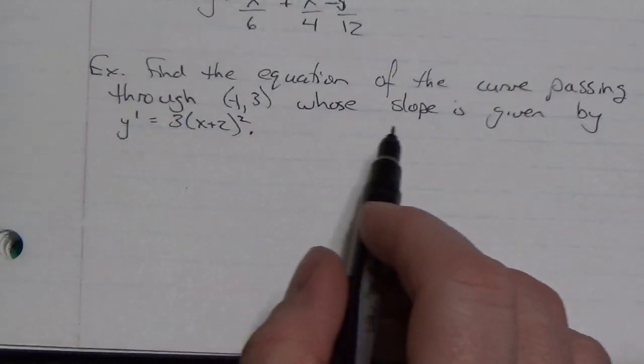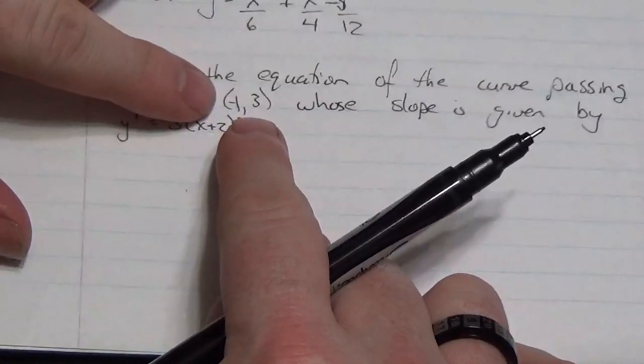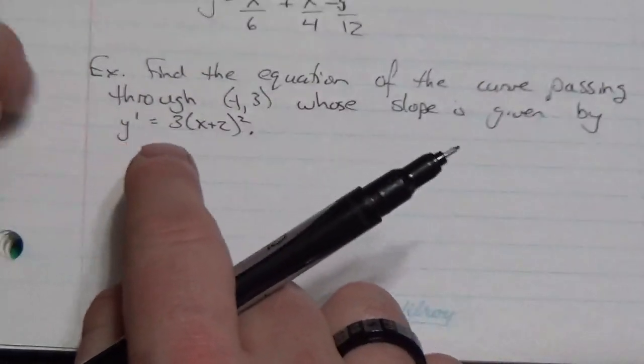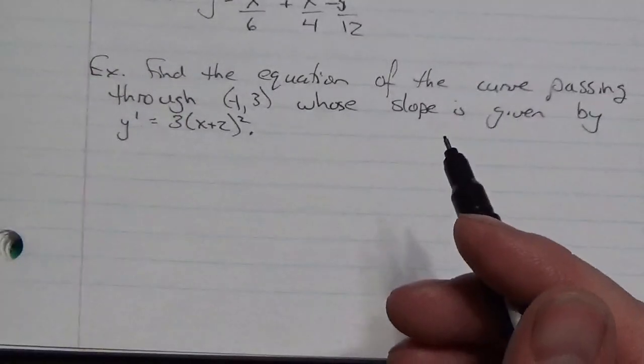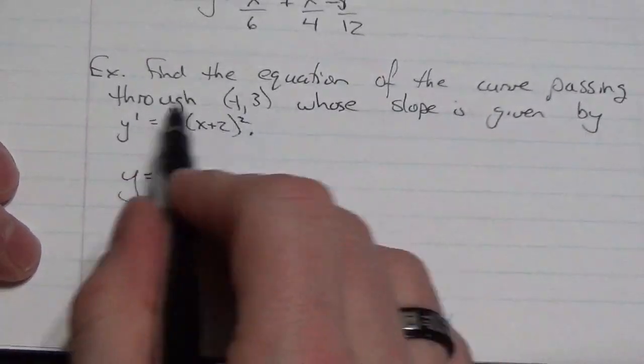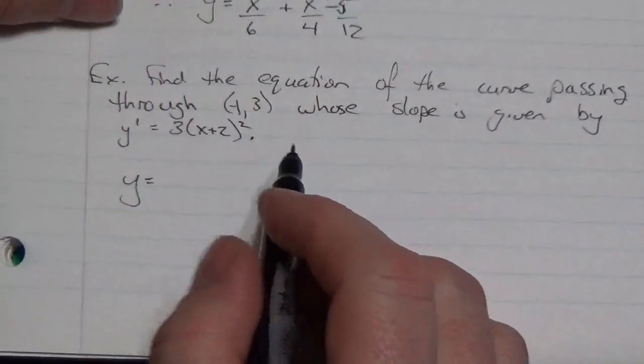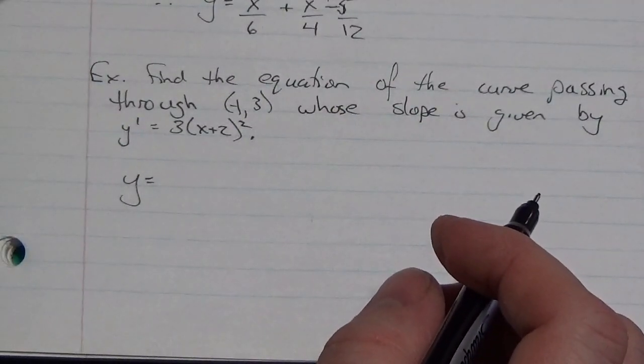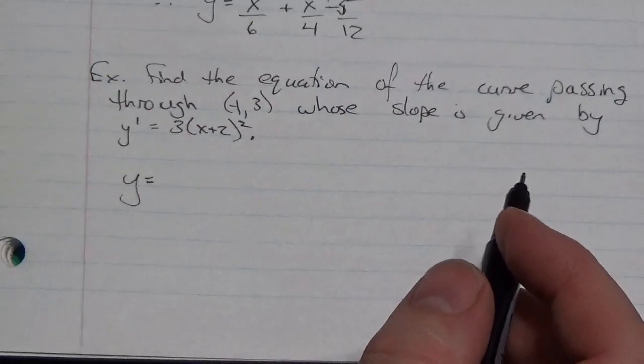Here's our next equation. Find the equation of the curve passing through the point (-1,3). So right there, there's our boundary condition. That's what's going to give us enough information to get the arbitrary constant. Whose slope is given by this function, y' = 3(x + 2)^2. There's my slope. I know that to get the function out of this, I simply have to take the antiderivative. Now, because of the way this is written, this looks like it needed the chain rule to have its derivative taken. However, the derivative of what's inside is just 1. So I think that's going to work in my favor.